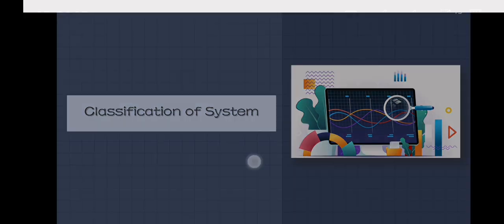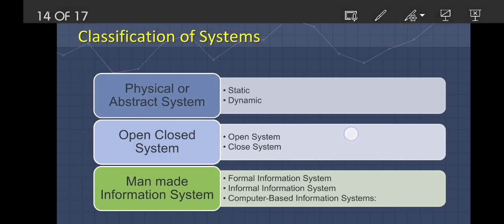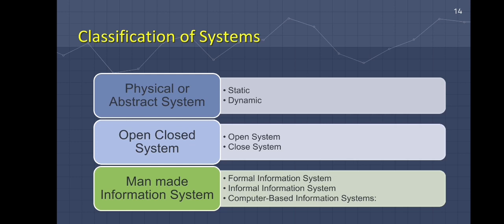Now there are several different sorts of systems. These systems can be classified in a variety of ways in order to gain a better understanding of them. First is the physical or abstract system.